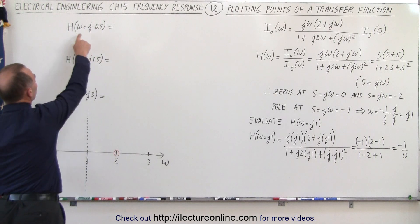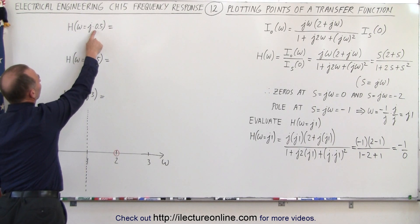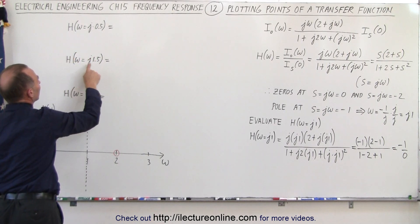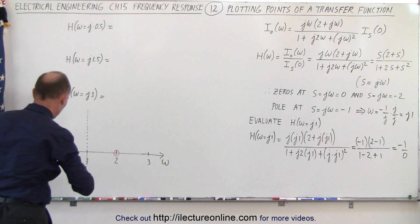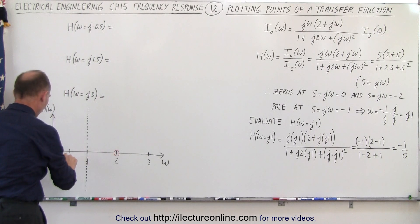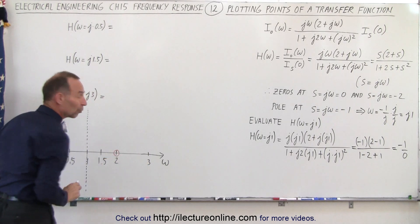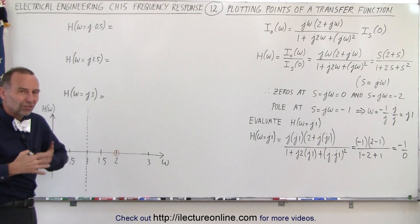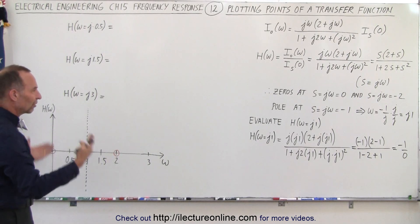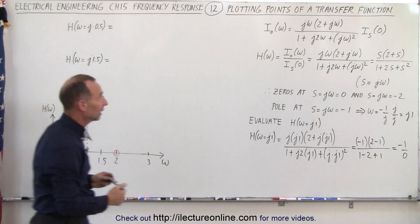Note that the numerator is negative, which gives us some indication of what the graph looks like — at least that is where the asymptote is. Now let's evaluate the transfer function for ω equals 0.5j, for ω equals 1.5j, and for ω equals 3. That will give us three more points, and we can see what the transfer function looks like. We do this to gain a better understanding of transfer functions and how to deal with them.